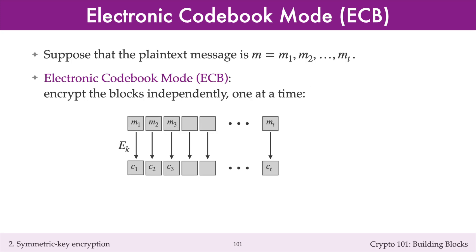One way to encrypt the multi-block message M is to use electronic codebook or ECB mode. In this mode, one encrypts the message blocks independently, one at a time.